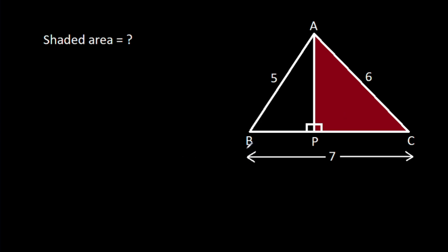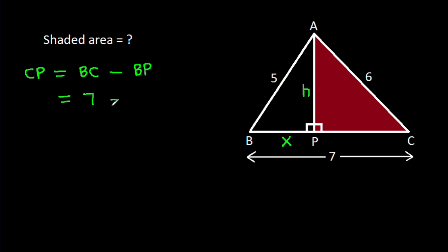Suppose BP is X, and AP is H. Then CP will be BC minus BP, and BC is 7, minus BP is X. So CP will be 7 minus X.